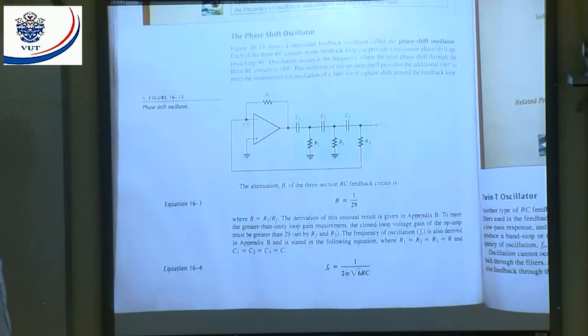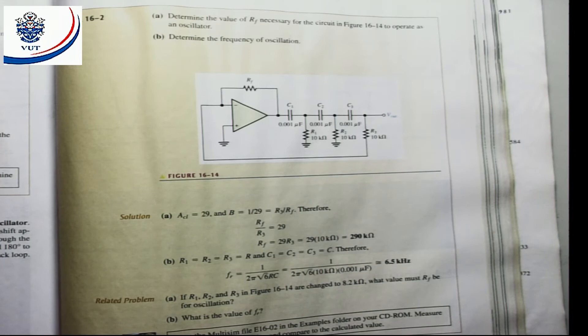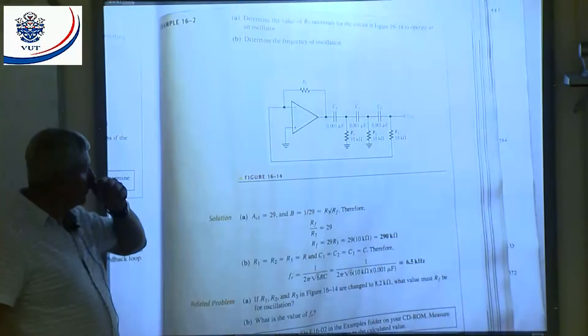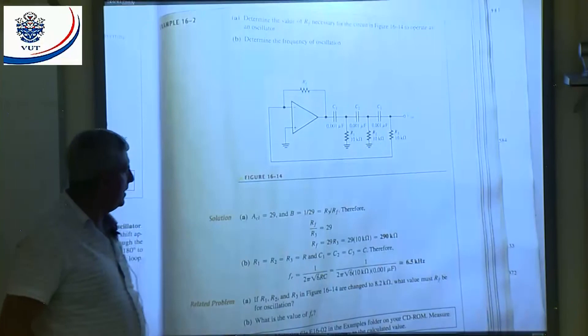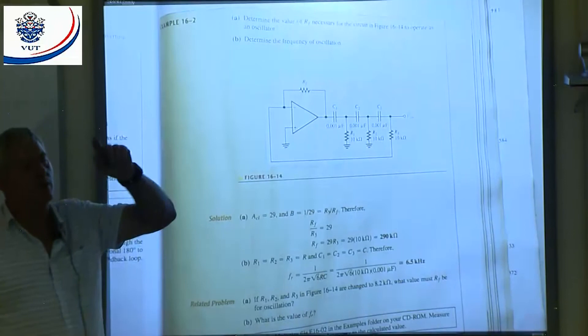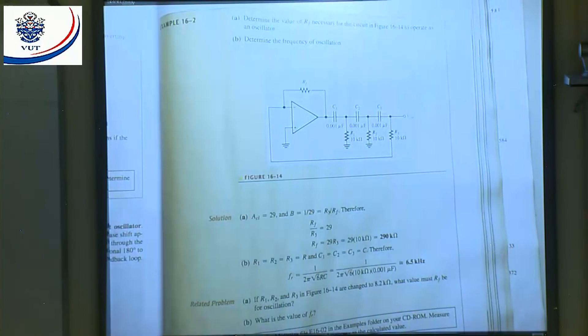Example 16.2: determine the value of RF for the circuit in figure 16.14 to operate as an oscillator, and determine the frequency of oscillations. The attenuation is 1/29, so the closed-loop gain of the amplifier should be 29. With input resistance of 10 kΩ, RF equals 29 × 10k = 290 kΩ, giving a gain of 29. Then working out the resonant frequency gives 6.5 kHz.